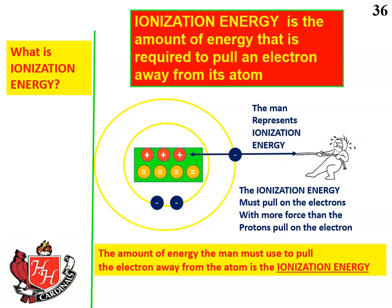So what is ionization energy? Ionization energy is the amount of energy that is required to pull an electron away from its atom. The man in the analogy represents ionization energy, and the ionization energy must pull on the electrons with more force than the protons pull on the electron. It's kind of a tug of war — if the man can pull with more energy than the protons are pulling in, then that electron will be released, and that amount of energy is called the ionization energy.